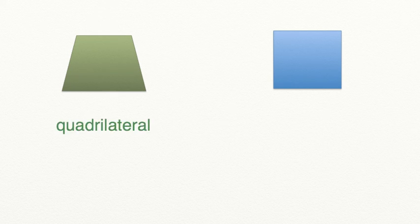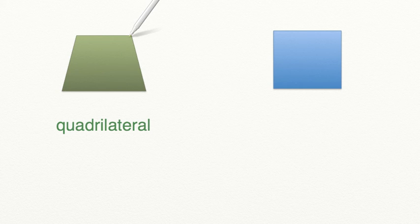I want you to list all of the different words that we can name each of these two shapes. Let's start with our green shape. We know that it has four sides, so we can at least call it a quadrilateral. But let's get more specific. This shape also has one set of parallel sides. It does not have 90-degree angles, and it does not have more than one set of parallel sides, which means it is a trapezoid.